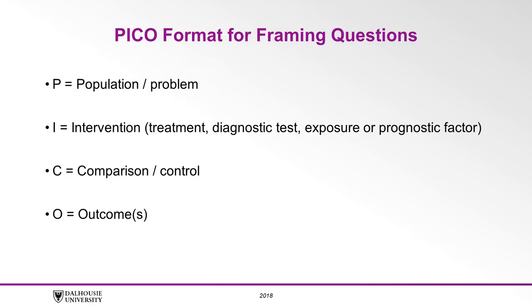The best way to frame a question is to use the most widely accepted PICO model, where P stands for the population or problem, I stands for intervention, C stands for comparison if there is one — sometimes there may not be a comparison — and O stands for the outcome or outcomes of interest.